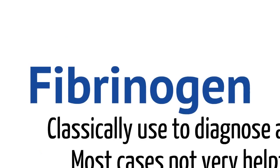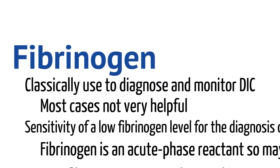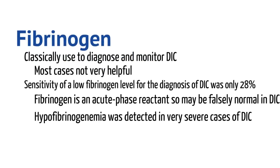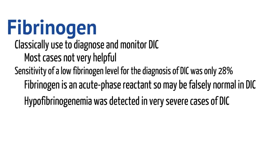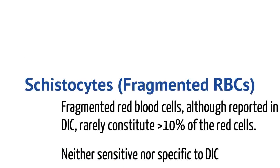Another lab we commonly get is fibrinogen. Fibrinogen is classically used to diagnose and monitor DIC. However, fibrinogen in most cases may not be very helpful, because fibrinogen has a very low sensitivity for the diagnosis of DIC — at about 28%. Fibrinogen is an acute phase reactant, meaning when the body is stressed or sick, the body will produce fibrinogen. So the fibrinogen level may be falsely normal, even though the body is rapidly consuming it. Hypofibrinogenemia is rarely detected in DIC; it's only seen in the most severe cases.